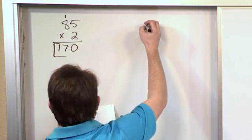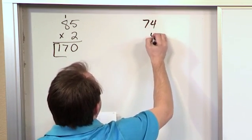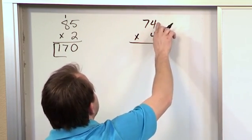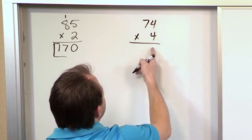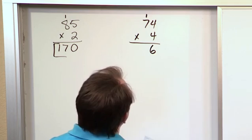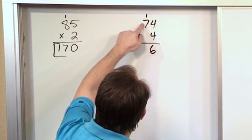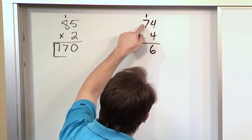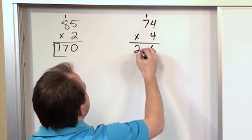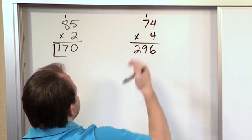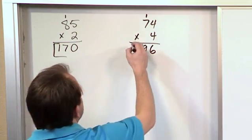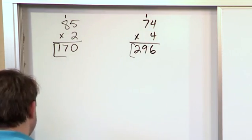What if we have the problem 74 times 4? So again, we start multiplying on the right-hand side. 4 times 4 is 16, but we can't just write 16. We have to put a 6 and carry a 1 to the next column. Then we take the 4 and multiply by that digit, which is 4 times 7 is 28, plus what we carried, 1, which is 29. We can go ahead and put the whole 29 down here because there's no other digits to carry to. So we'll have 296, and that's the final answer.